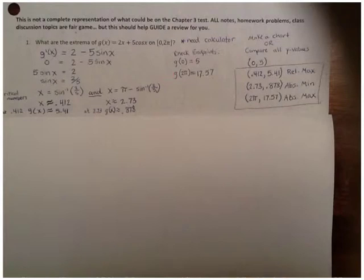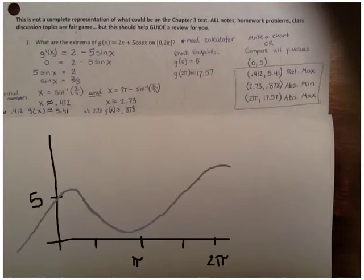So we could make our sine chart or we could just compare the y values and try to think about what this graph might look like. If you look at this curve, you can see that we have a relative maximum at that coordinate from our critical number 0.412 comma 5.41.